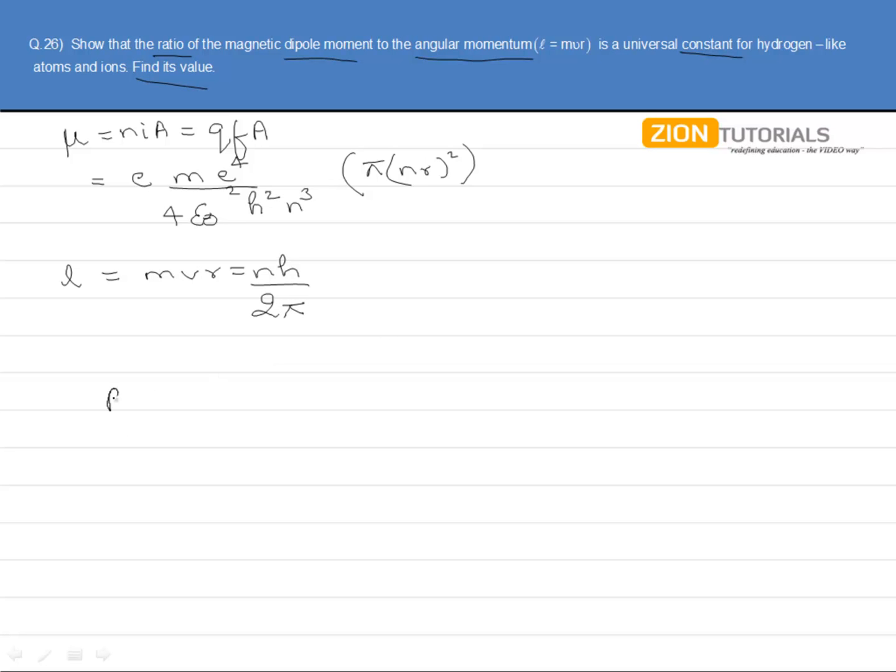So we can have the ratio to be (E⁵MπR²N²)/(24ε₀H³N³) into (2π)/(NH).